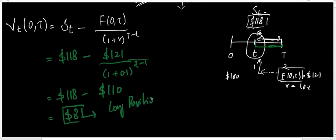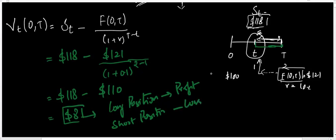This $8 profit to the long position means it is a loss to the short position. As discussed, whatever is profit to the long position is a loss to the short position. In the next lectures we will talk about the pricing and valuation of other types of contracts like equity forwards and currency forwards.